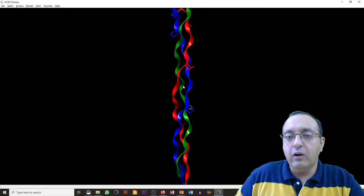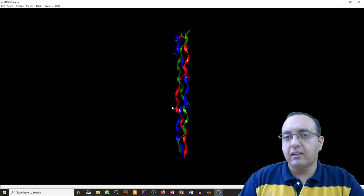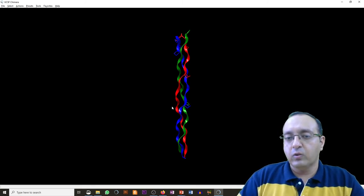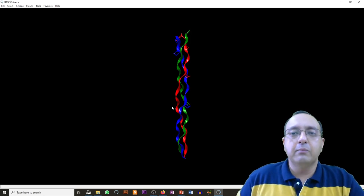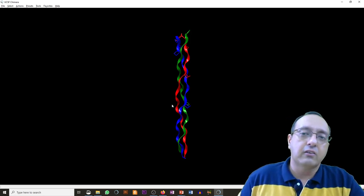And if you zoom out, then you can see the right-handed helix nature of the overall collagen helix. Individual chains are left-handed, but ultimately the collagen helix is right-handed.